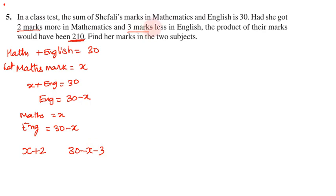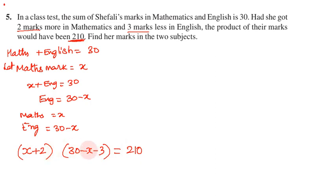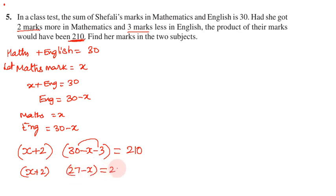The math mark is less than the English mark. Using this product equal to 210: math mark x plus 2, English mark is 30 minus x, so reduced by 3 gives 27 minus x. Therefore, (x + 2)(27 - x) = 210.